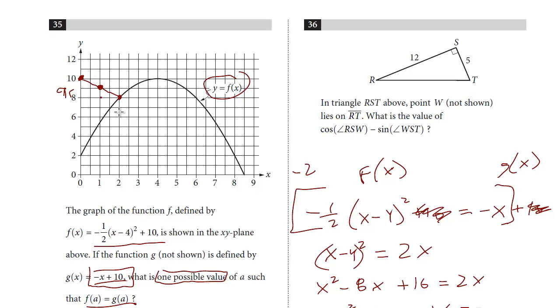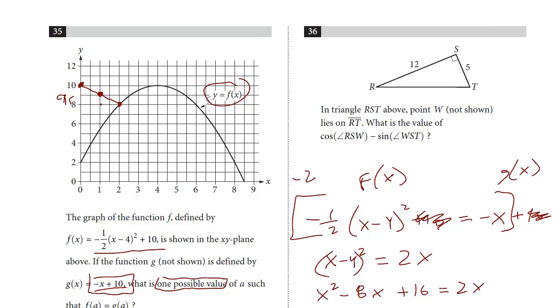But that really saves a lot of time. So if you understand how these functions work and how to find the intersection, it's not always going to be so easy, but definitely a shortcut. Let's take a look at number 36.